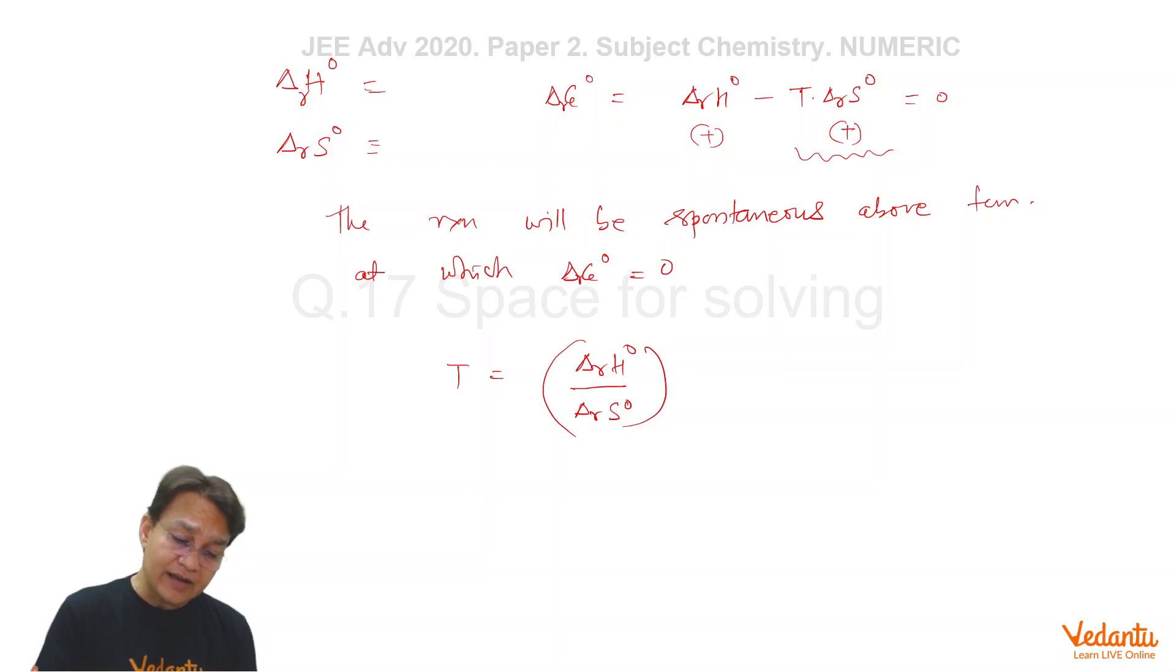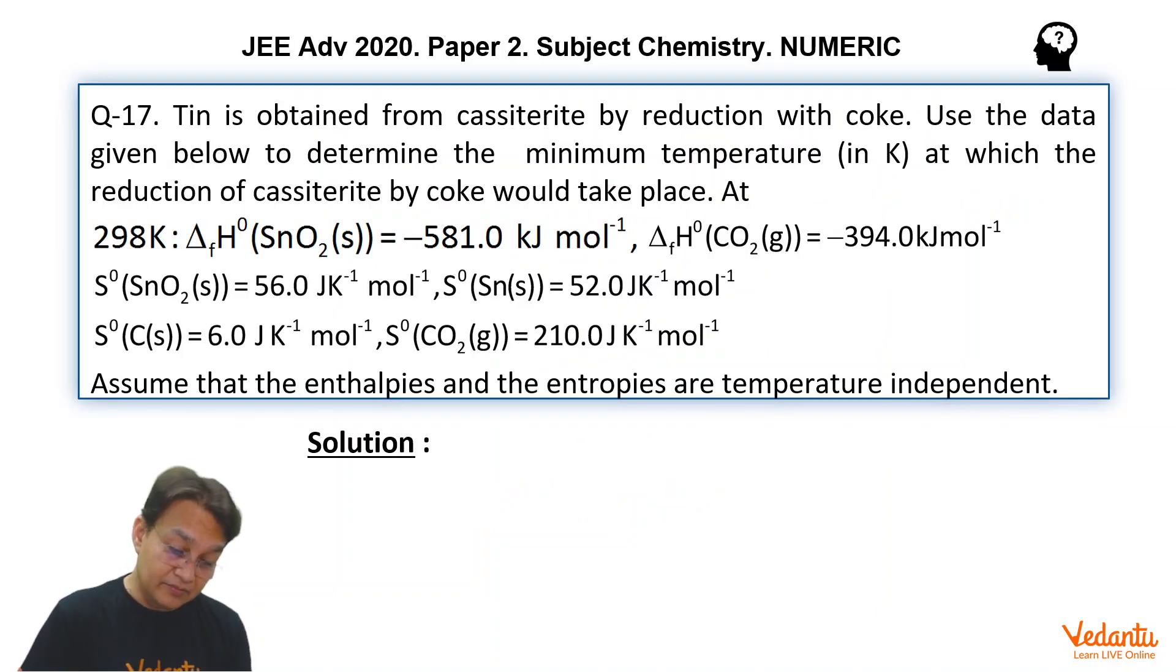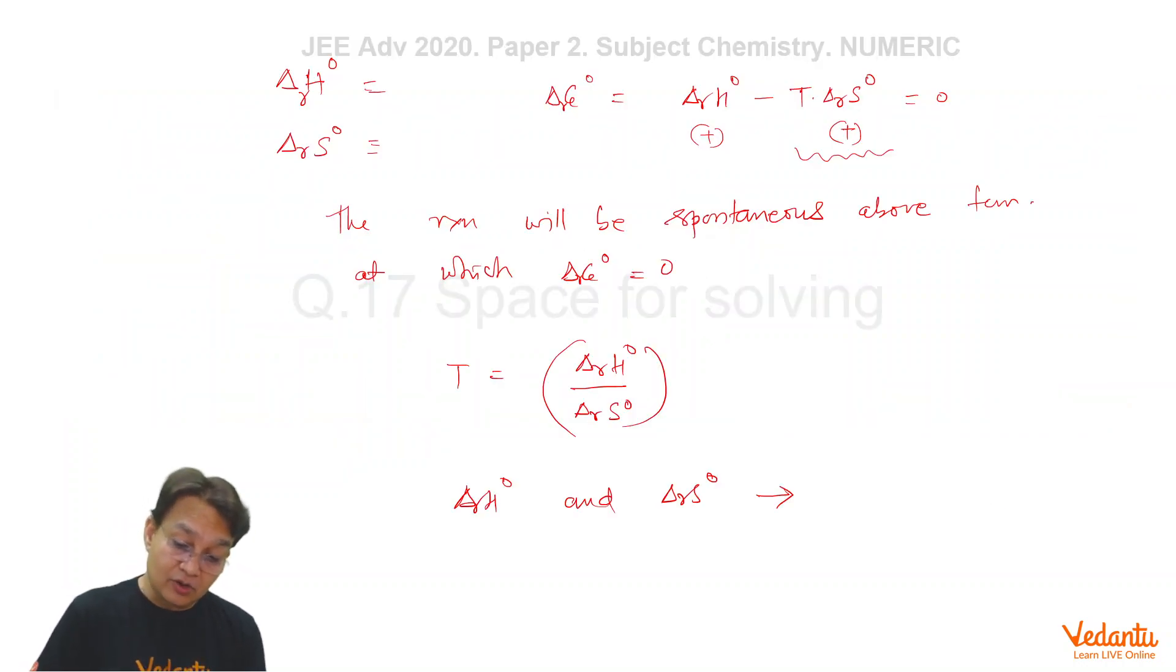In this question, we will have to assume that delta RH0 and delta RS0 are not varying with temperature. In fact, these quantities also vary with temperature, but it was clearly given in this problem: assume that the enthalpies and entropies are temperature independent. That's a very unreasonable assumption, but we have to take it for solving the problem.